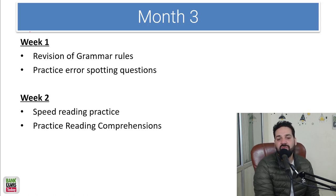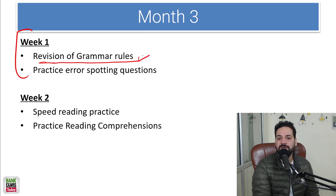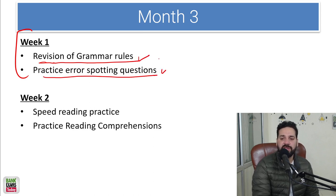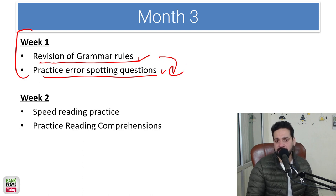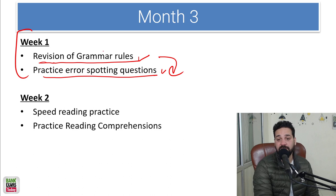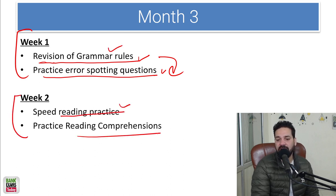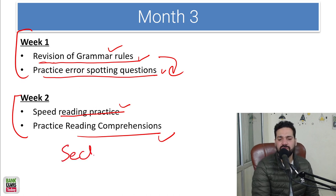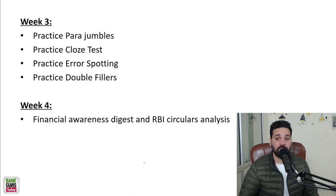In month 3, week 1, we cover grammar rules — revision of grammar rules. We will teach you the grammar rules followed by error spotting questions. Based on the grammar rules, error spotting questions will be practiced throughout the whole week. In week 2, practice speed reading and reading comprehension, and you can also take a sectional test. Taking that sectional test would be very, very helpful.